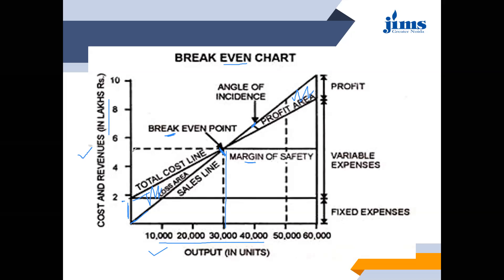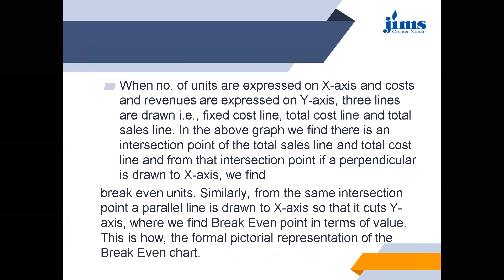At 20,000 units and 5 lakh amount is the break-even point for this company. When number of units are expressed on the x-axis and cost and revenues on the y-axis, three lines are drawn: fixed cost line, total cost line, and total sales line. There is an intersection point of the total sales line and total cost line. From that intersection point, if a perpendicular is drawn to the x-axis, we find break-even units. Similarly, a parallel line drawn to the x-axis cuts the y-axis to give break-even point in terms of value.